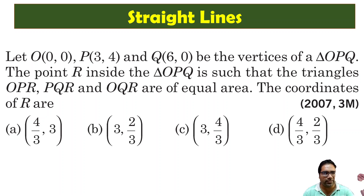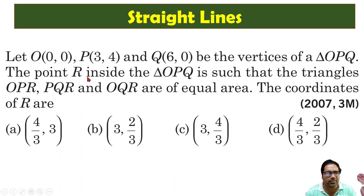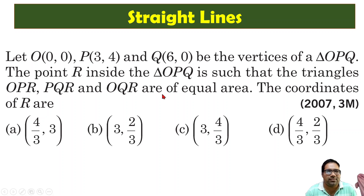We are given three vertices of triangle OPQ. There is a point R which is inside this triangle such that the area of OPR, PQR, and OQR is the same — all three areas are equal.